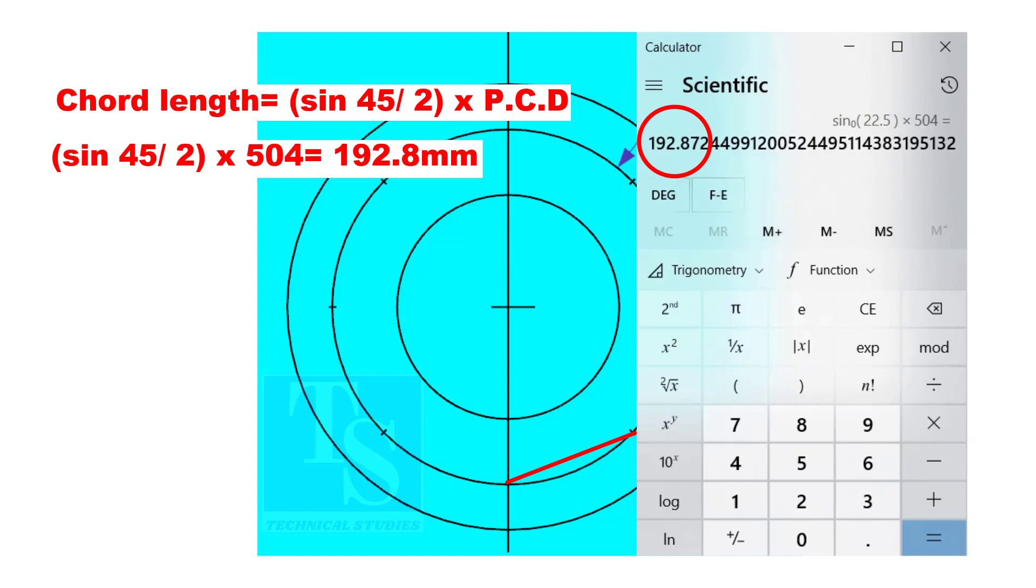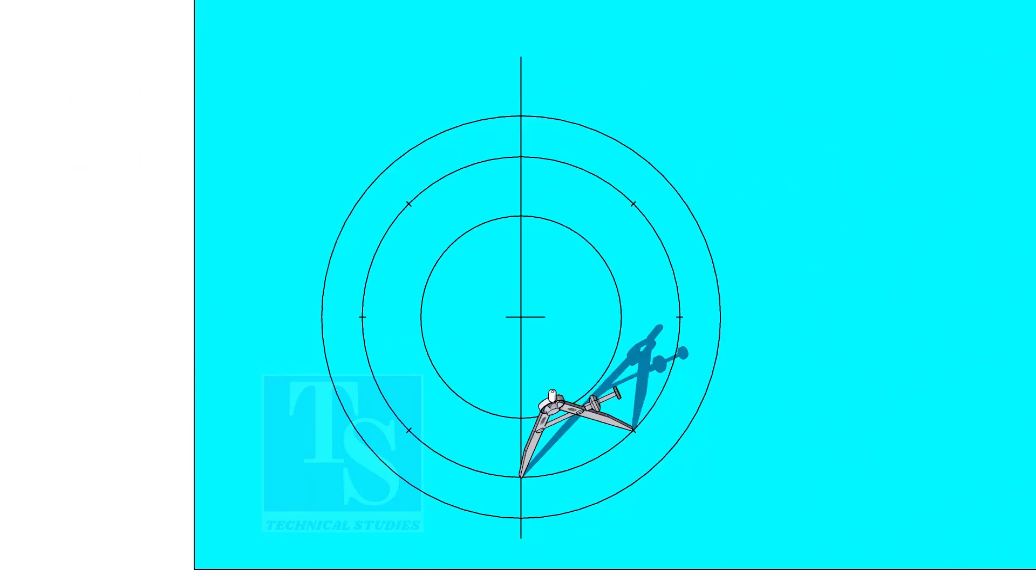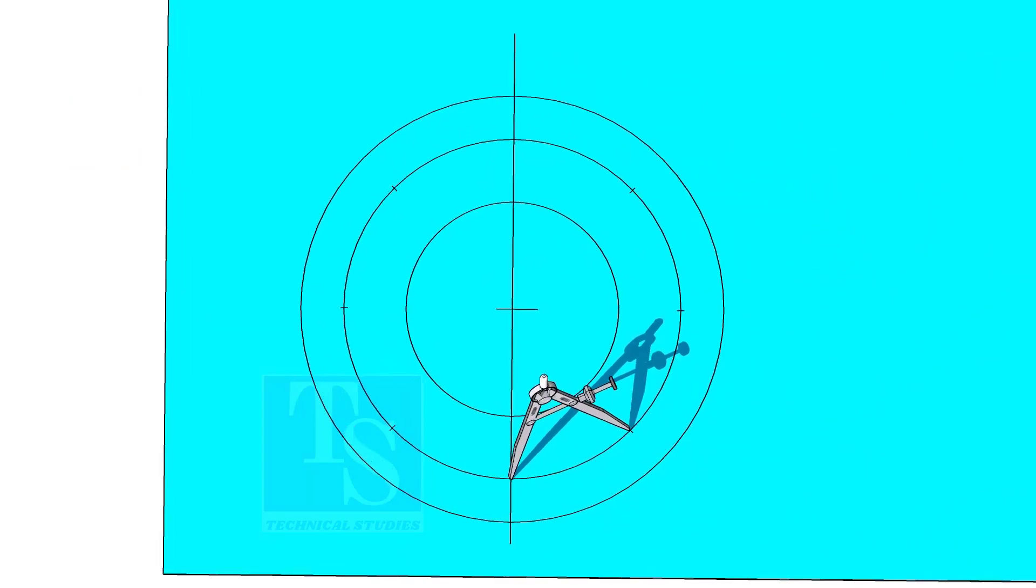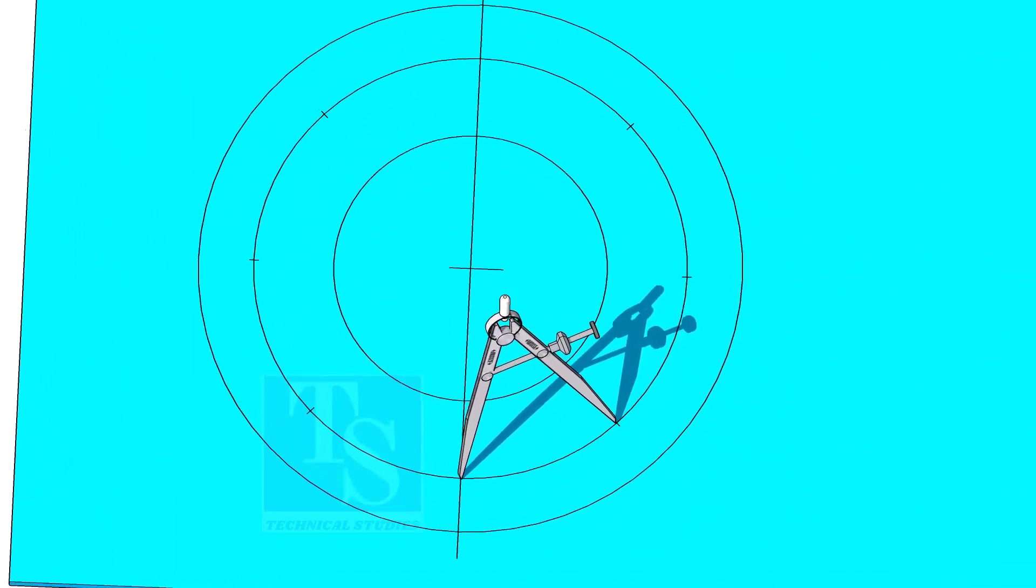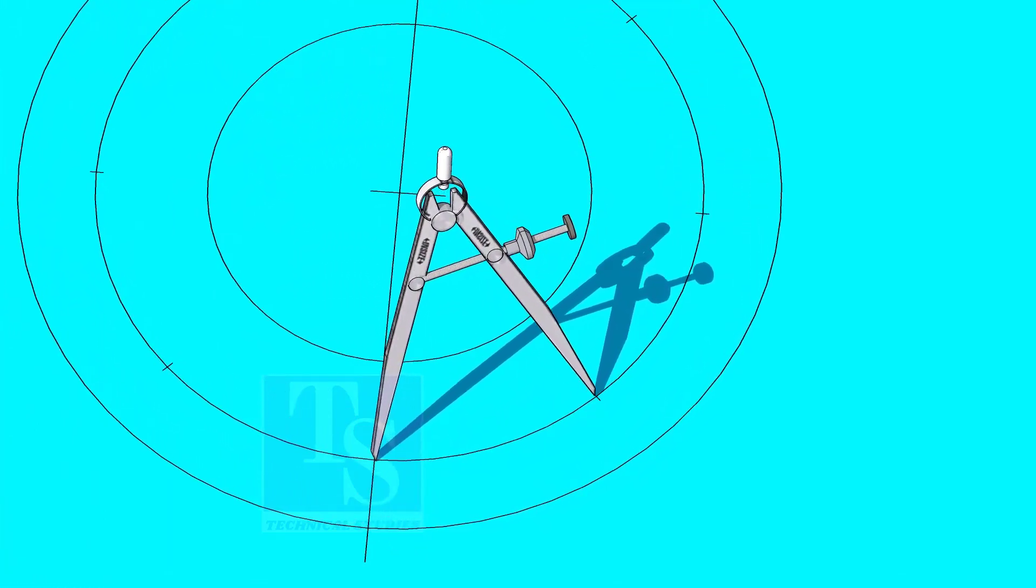The chord length is 192.8 millimeters. Adjust the divider to 192.8 millimeters, and divide the PCD into 8 parts.